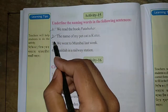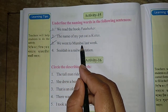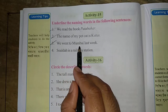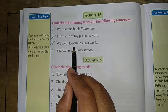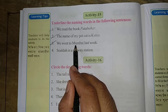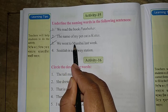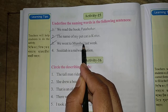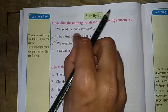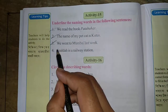Number three: 'We went to Mumbai last week.' Mumbai is a place name, a city name. So underline Mumbai. Mumbai is a naming word.